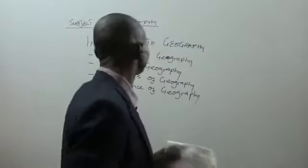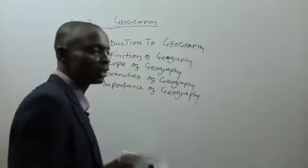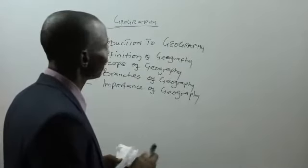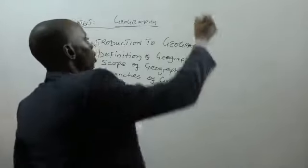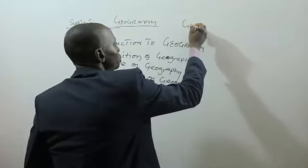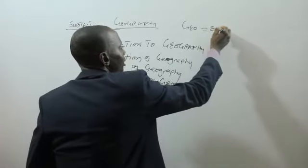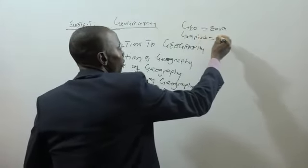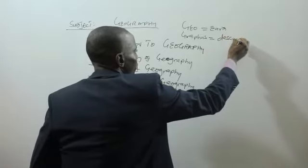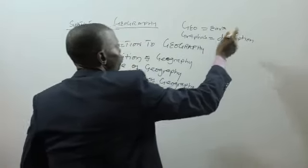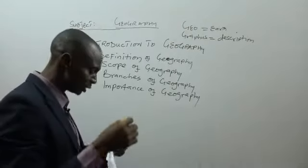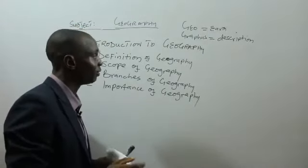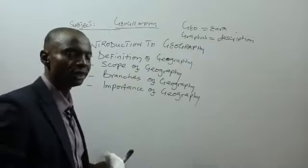So without wasting time, let's start. Geography is a social science subject, and it's a Greek word derived from two parts. Number one, we have 'geo' — geo means earth. Number two, we have 'graphos' — graphos means description, to describe. If you merge these two words together, geography can be defined as the description of the earth.